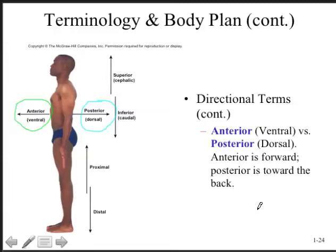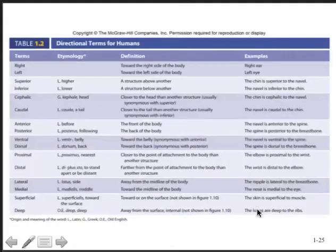Here are some practice examples: the eyebrows are superior to the eyes; the shoulder blades are posterior to the sternum; the ear is posterior to the eyes; the nose is medial to the eyes; the ears are lateral to the eyes; the knees are inferior to the hips; the ankles are inferior to the knees; the knees are proximal to the ankles; the shoulder is proximal to the elbow; and the elbow is distal to the shoulder and proximal to the wrist. These are excellent practice exercises for understanding directional terms, found in table 1.2 in your book.